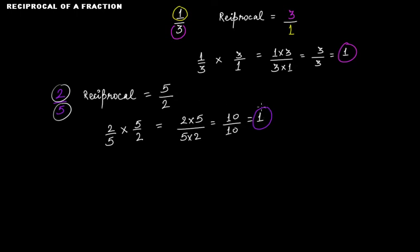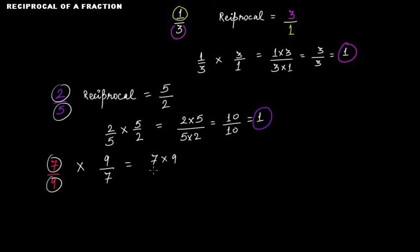Let's take a few more examples. Say we have 7 over 9. The reciprocal of 7 over 9 — the denominator is 9, so make it the numerator, and the numerator is 7, so make it the denominator. The reciprocal is 9 over 7. Multiplying 7 over 9 by 9 over 7 gives 63 over 63, which equals 1.